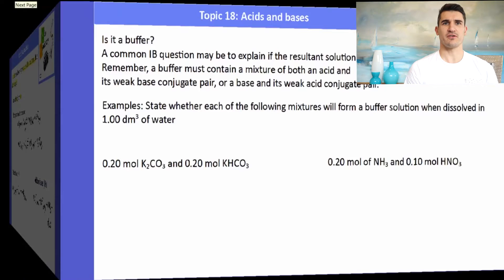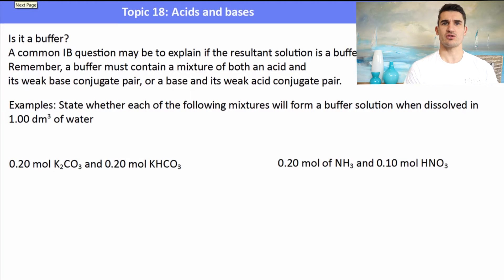So a common question for IB is to look at a mixture of two chemicals and to work out whether or not it's a buffer. Remember a buffer must contain a mixture of an acid and its weak base or a base and its weak acid conjugate pair. So in the first one we have K2CO3 and KHCO3. So we have the carbonate ion and the hydrogen carbonate ion. So we have our conjugate base and our acid. So this is indeed a very simple buffer. We've got both of those in the solution.